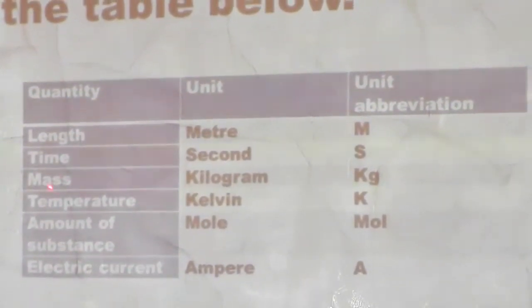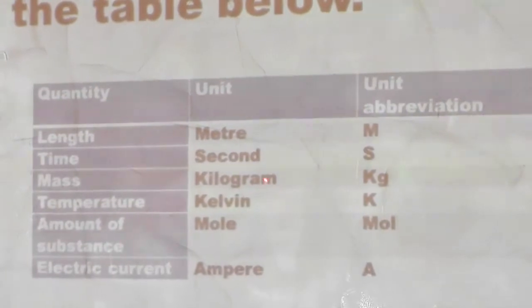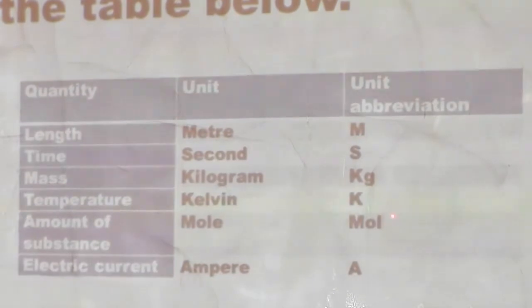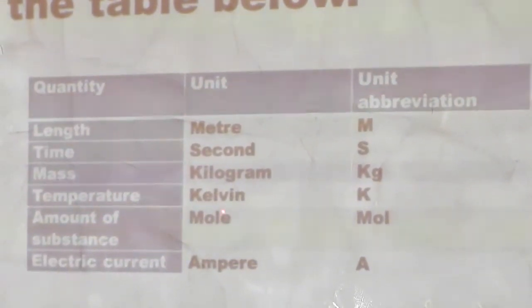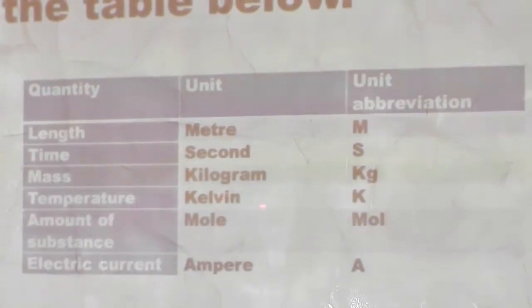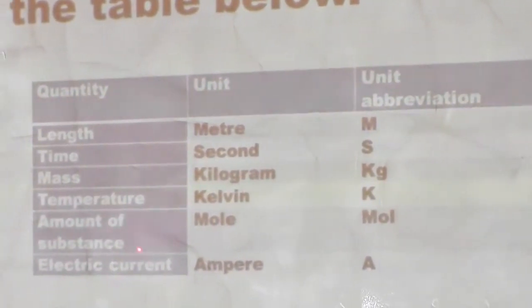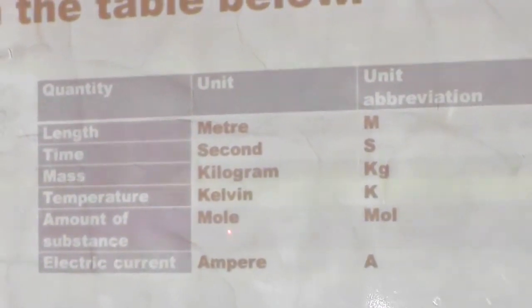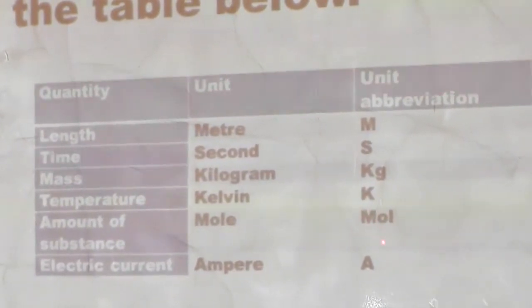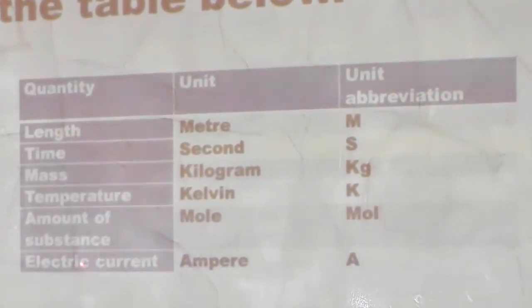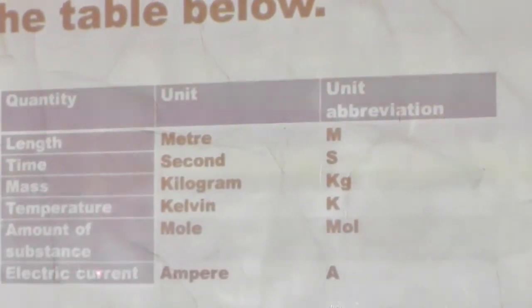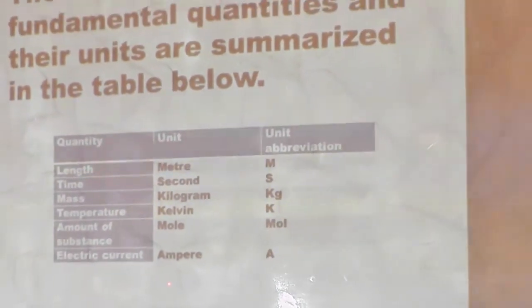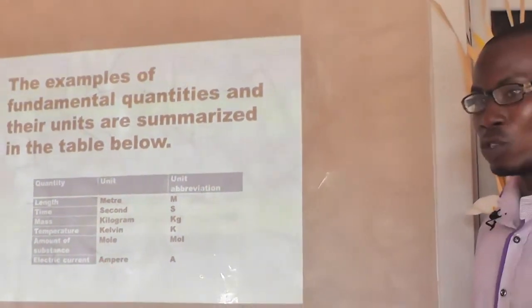We have mass, measured in kilograms, with abbreviation KG. We have temperature, measured in Kelvin, with abbreviation K. We have amount of substance, which is measured in mole, with abbreviation MOL. Then we have electric current — the unit of electric current is ampere, which means electric current is measured in ampere, with abbreviation A.